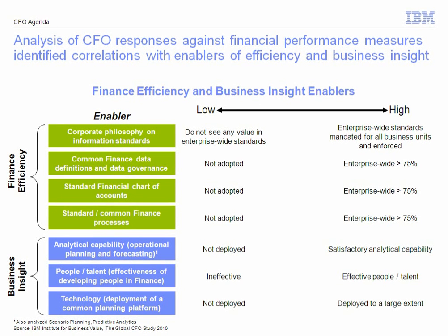Seven things came out as being most highly correlated. Four relate to this notion of having finance efficiency — a good, strong, well-run internal finance organization. One is the corporate philosophy on information standards: the degree to which process, policy, and data standards are mandated and enforced across the enterprise. The actual adoption is measured by common finance data definitions and data governance, a standard financial chart of accounts, and standard common finance processes in place.